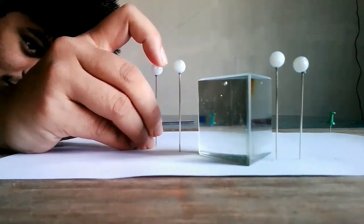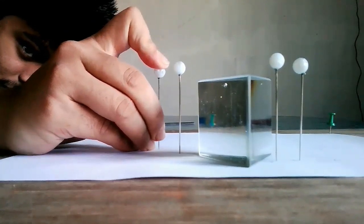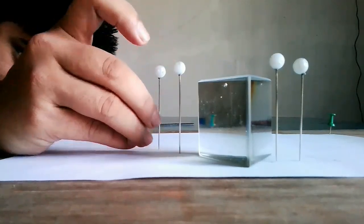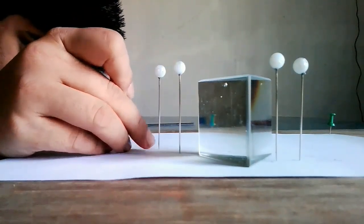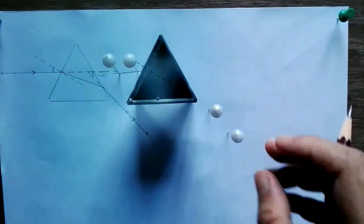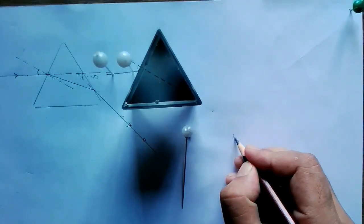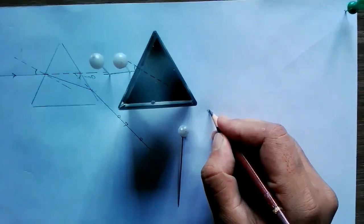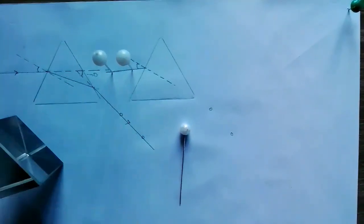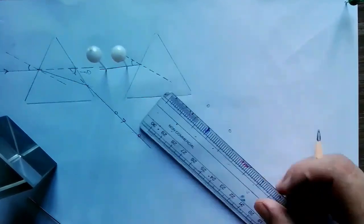Fix the third and fourth pin so they coincide with the first and second pins when viewed through the prism. Draw a straight line through the two points, which will give the emergent ray.